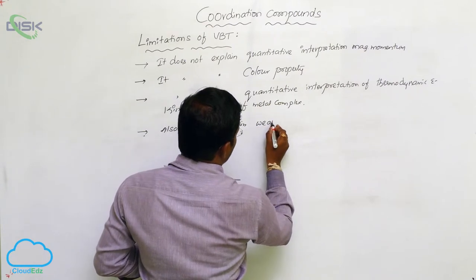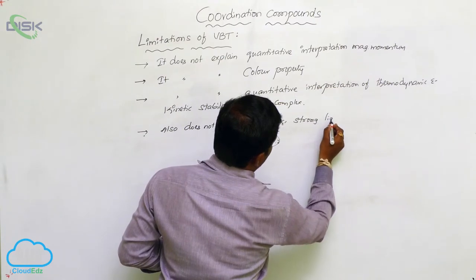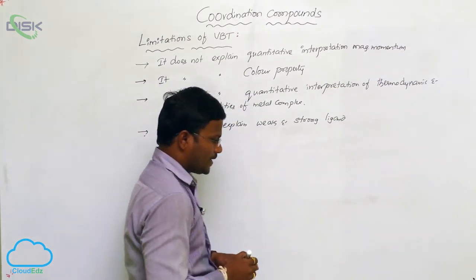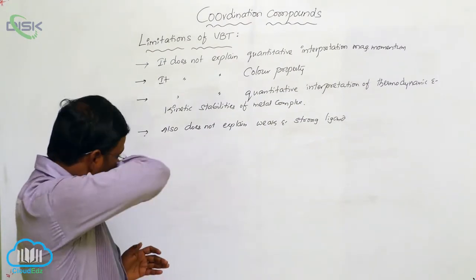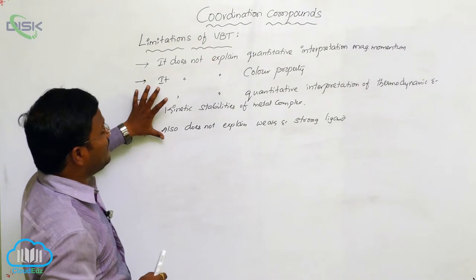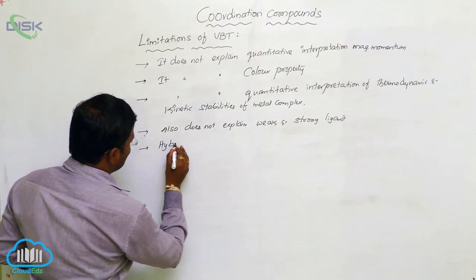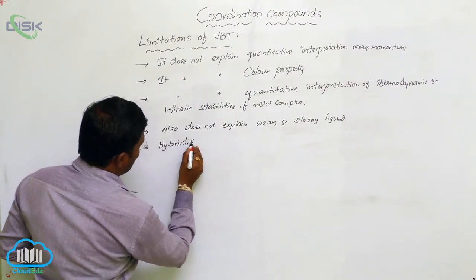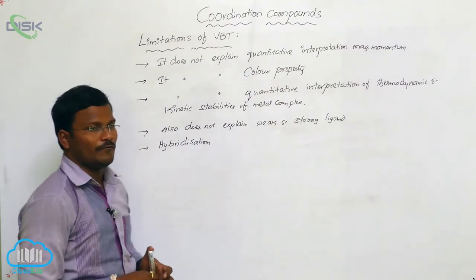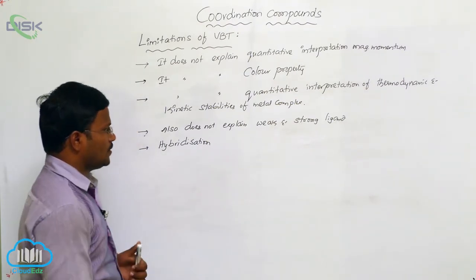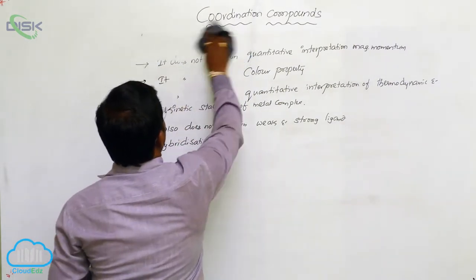VBT also does not explain weak and strong ligands. Furthermore, the manner or pattern of hybridization also fails to be explained under Valence Bond Theory. These are some of the key limitations or drawbacks of VBT.